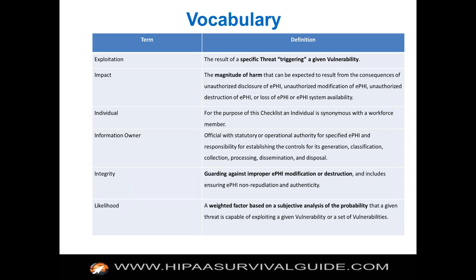Let me cover some terms important to the risk calculation. The idea of impact is the magnitude of harm that can be expected to result from unauthorized disclosure of ePHI, unauthorized modification, unauthorized destruction, etc. What NIST really asks in the risk equation is: what is the magnitude of harm to your mission? Most healthcare providers' missions are something like providing the best quality healthcare to patients at competitive prices.